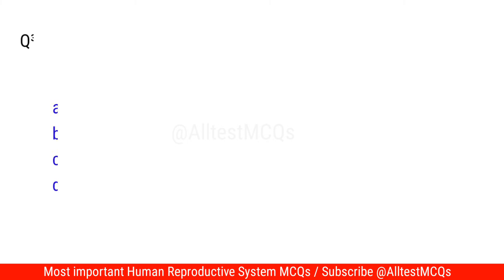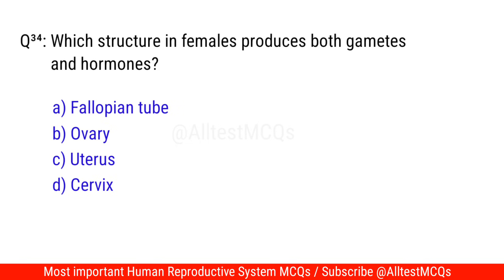Question No. 34: Which structure in females produces both gametes and hormones? The right option is B. Ovary.